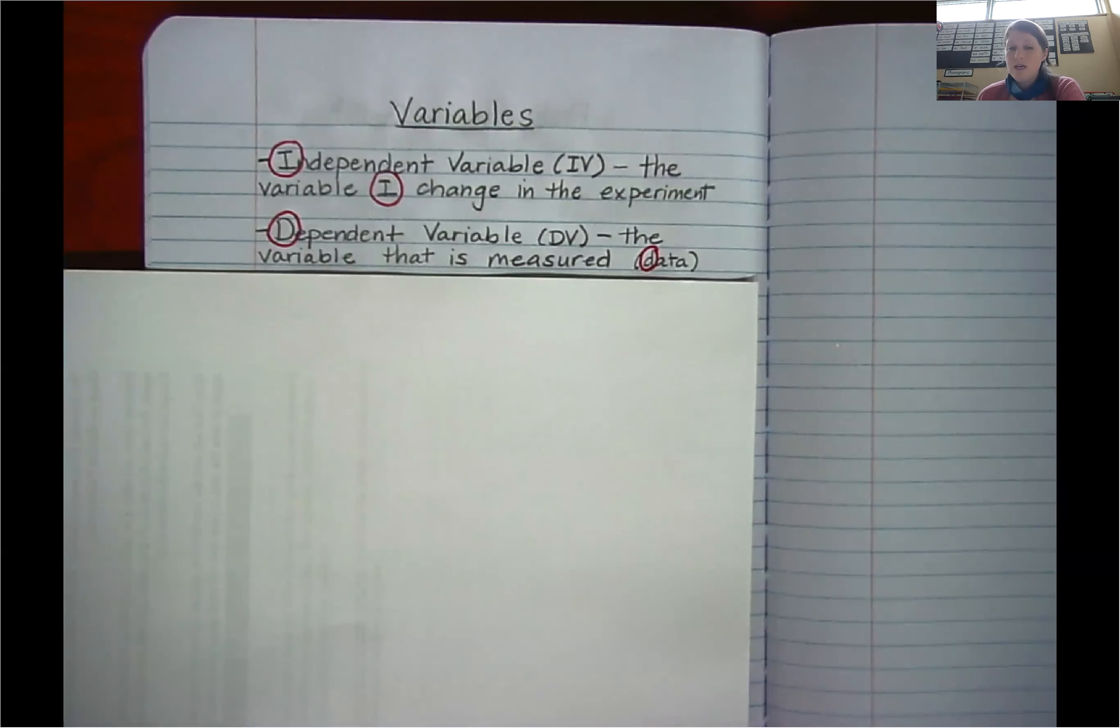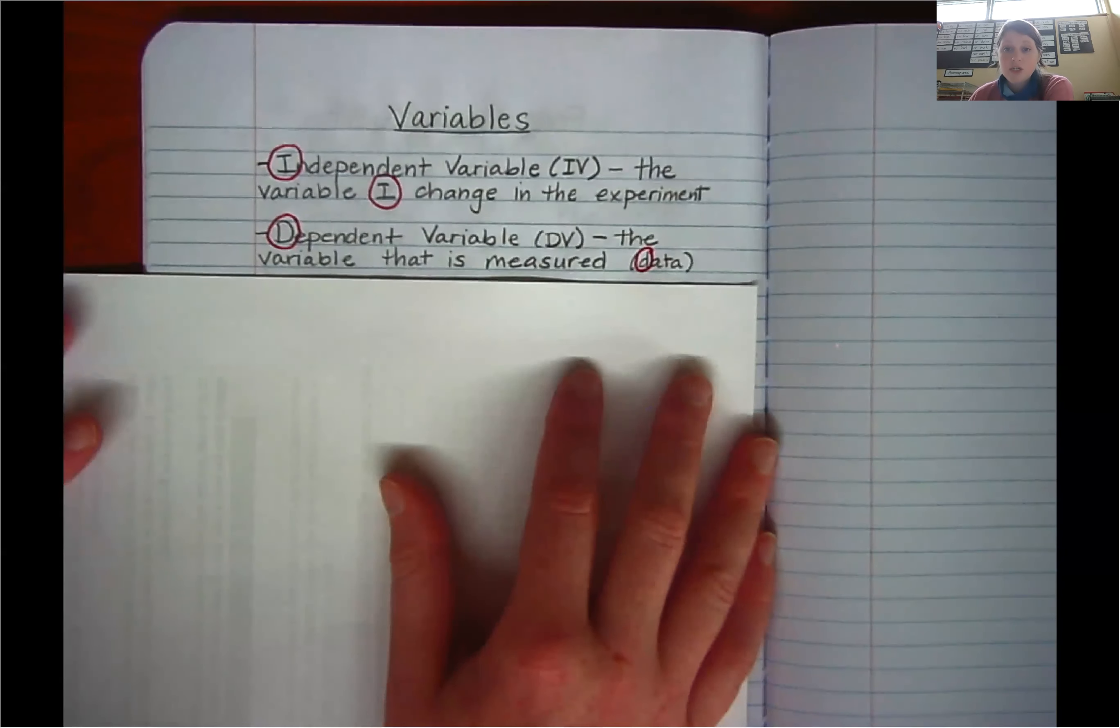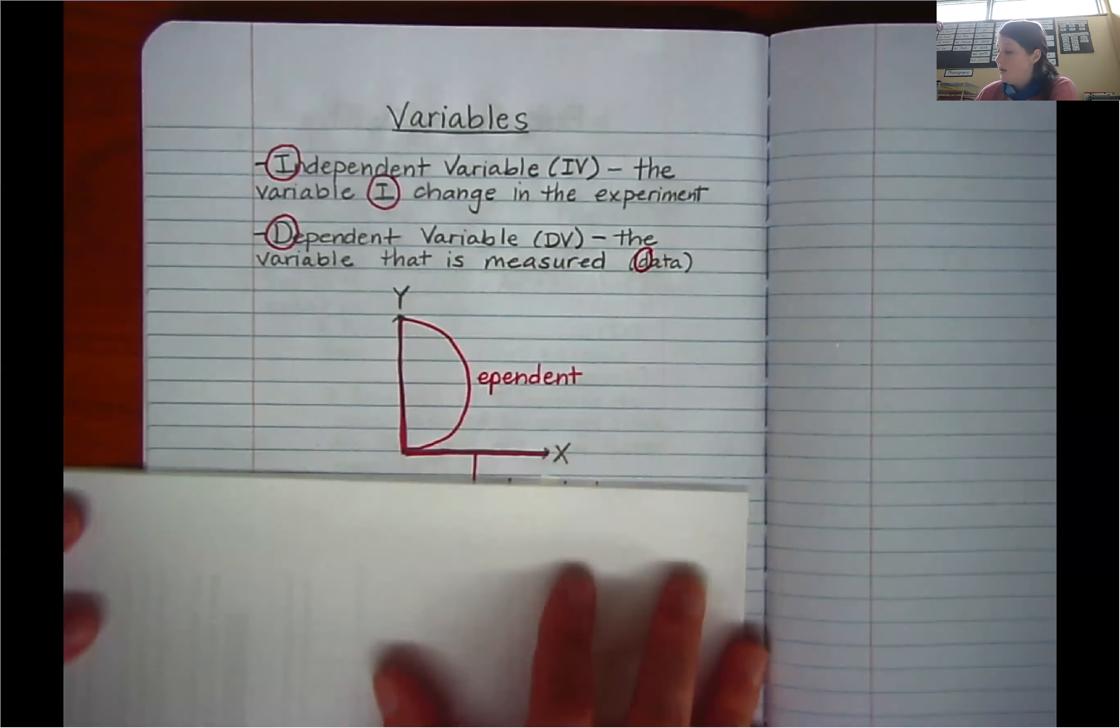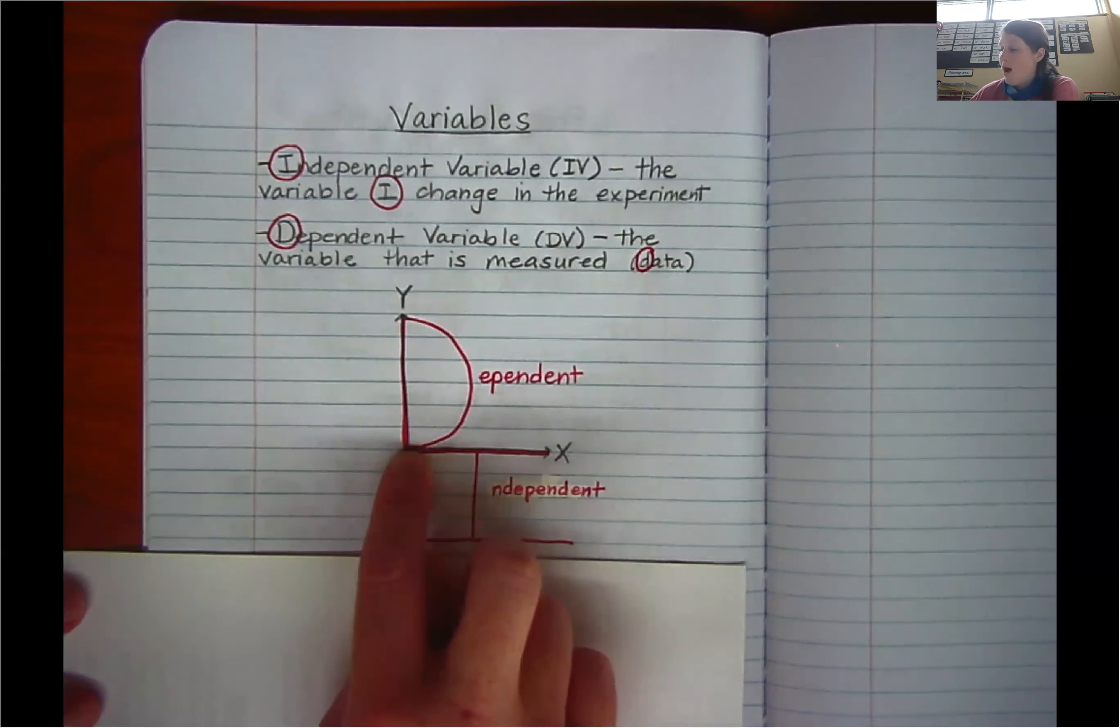So the next thing I'm going to show you is a graph. The standard structure of a graph is there's an x and y axis. So you've probably heard that in your math class. I'm going to show you a mnemonic on how to remember which variable goes on which axis.